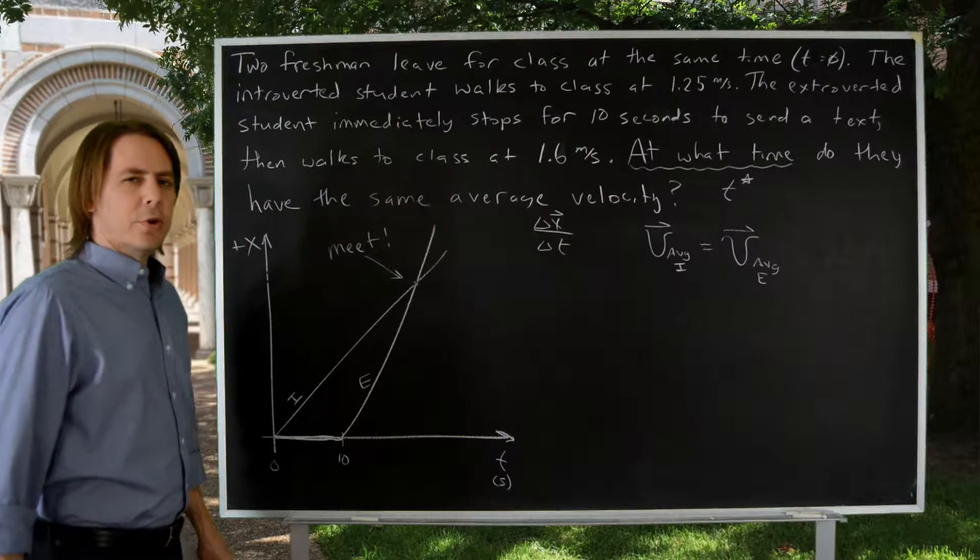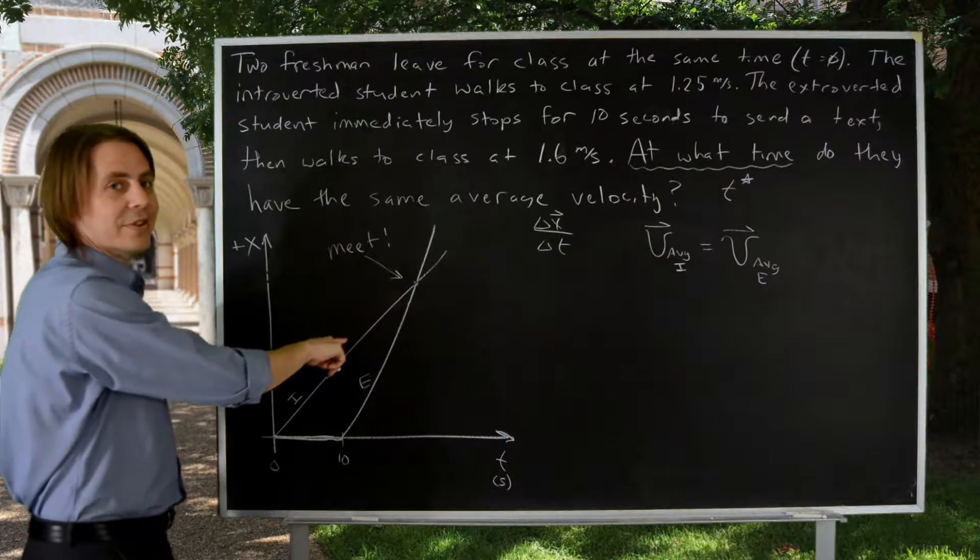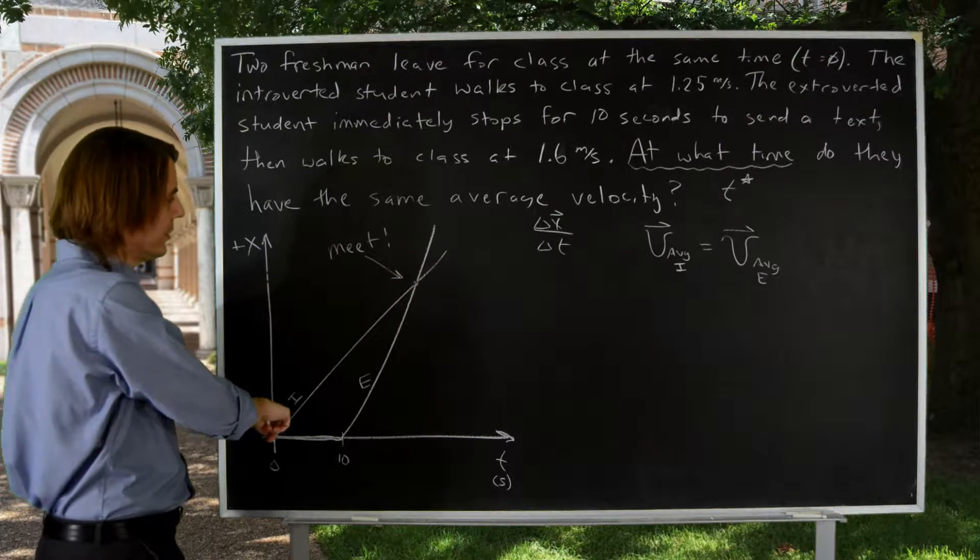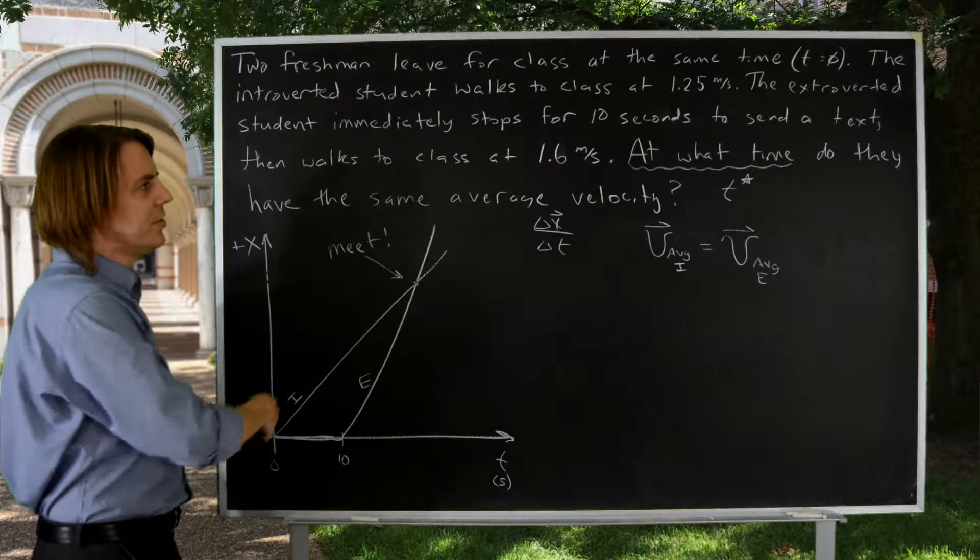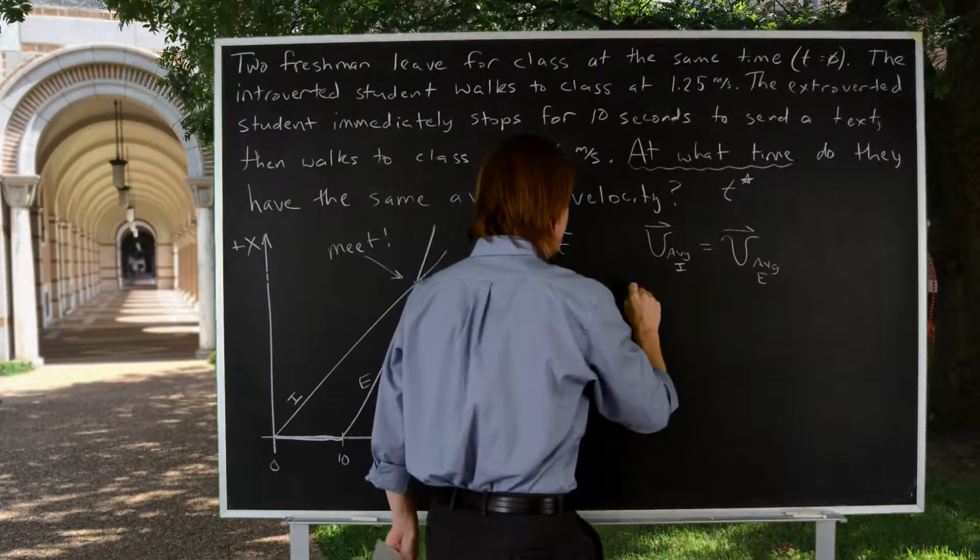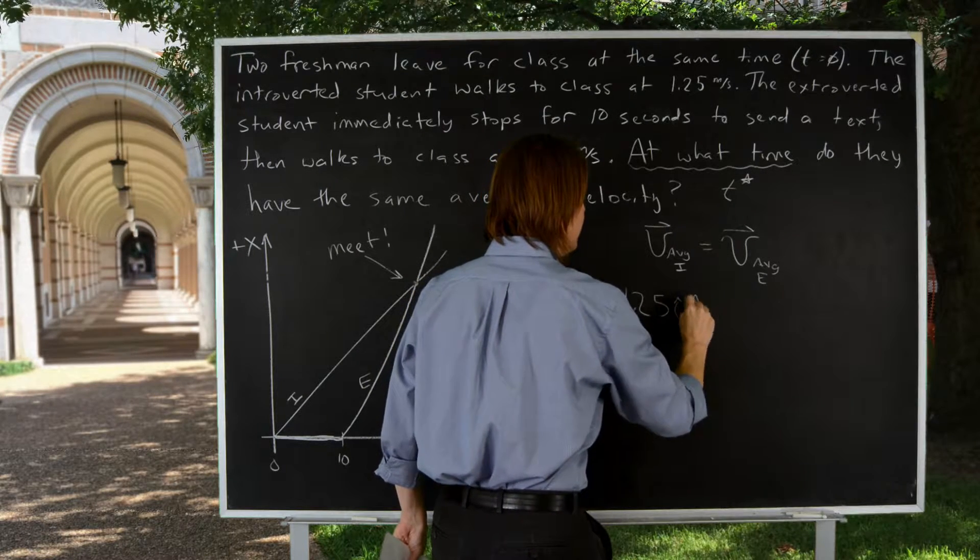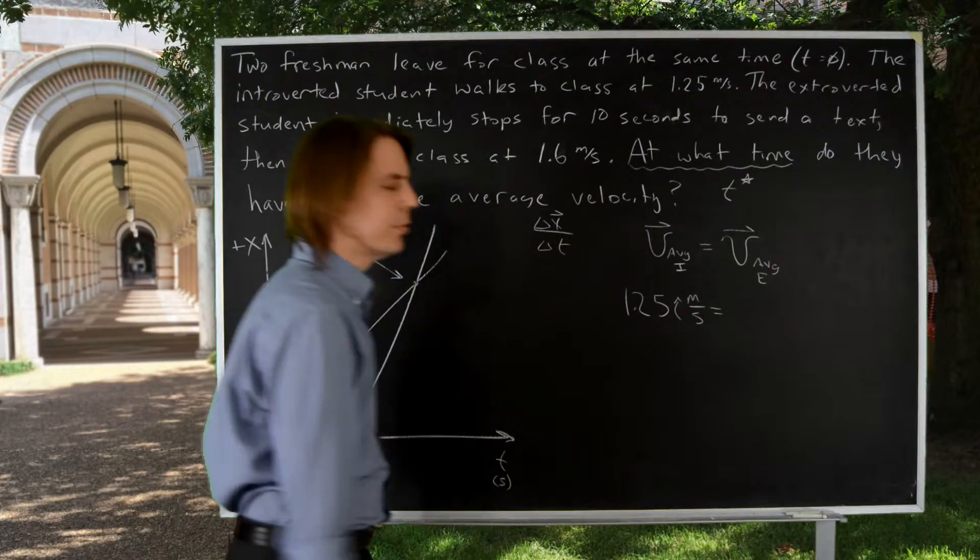All right, so average velocity of the introverted student never changed their instantaneous velocity. Just a constant 1.25. So theirs we already have. It's 1.25. We can just put that one in numerically. 1.25 i hat meters per second, since it's a vector, we'll put all that.